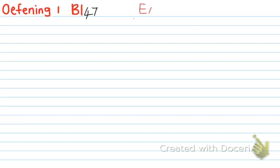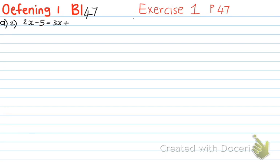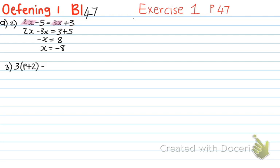Hopefully you are done with Exercise 1 on page 47. Number a2: 2x minus 5 equals 3x plus 3. I have x's on both sides, so I take all x's to the left: 2x minus 3x, and all numbers to the right: 3 plus 5. So 2x minus 3x is negative x, equals 8, therefore x equals negative 8.